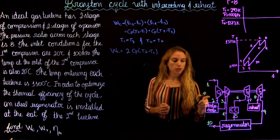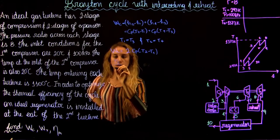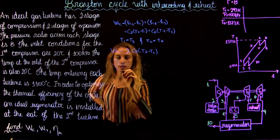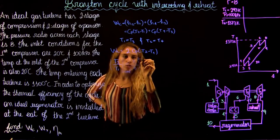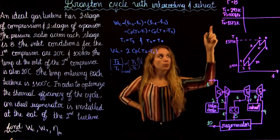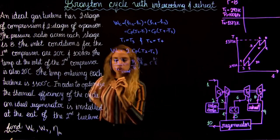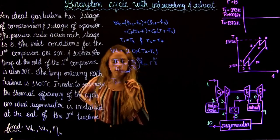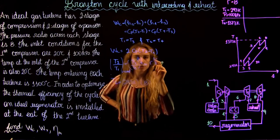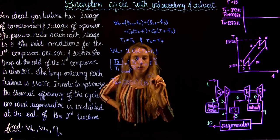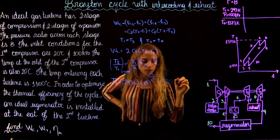We need to find the temperature at state 2 using the isentropic relation: T2/T1 = (P2/P1)^((k-1)/k). With the pressure ratio of 8, T2 = T1 × 8^(0.4/1.4). With T1 = 293 K, this gives us T2 = 535 K.